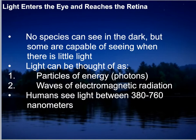Light can also be thought of as waves of electromagnetic radiation, and I'll show you a spectrum of that in the next slide. For now, note that humans, as amazing as our vision is, can only see a small portion of the entire spectrum — specifically between 380 and 760 nanometers.